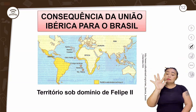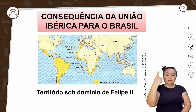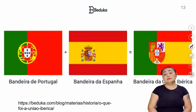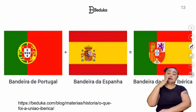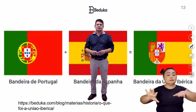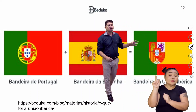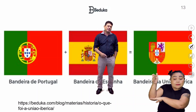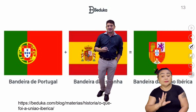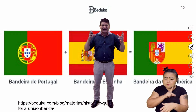Todo esse território estava sob o domínio de um só rei. Olha o poderio que o rei tinha. Bandeira de Portugal, bandeira da Espanha, bandeira da União Ibérica — a junção dessas duas bandeiras. De um lado a nação Portugal, de outro o reino da Espanha. Nós temos essa formação dessa nação que tentava se consolidar, que tentava controlar a economia do mundo.